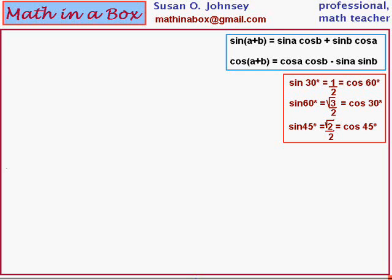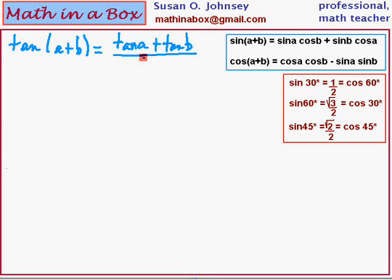We will be using several of these identities and trig values throughout this lesson. In this lesson, we are going to prove that the tangent of the sum of two angles equals the tangent of the first angle — I have called it A — plus the tangent of the second angle — I have called it B — divided by one minus the tangent of A times the tangent of B. This is an identity for the tangent of the sum of two angles.